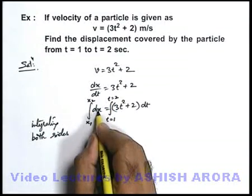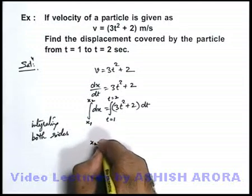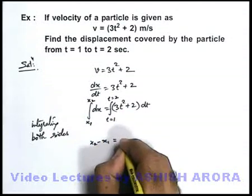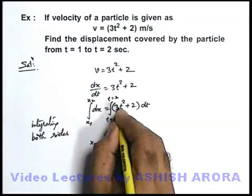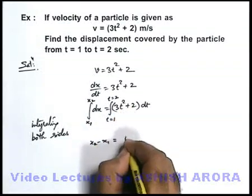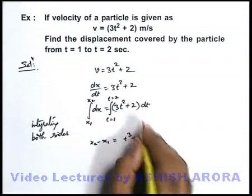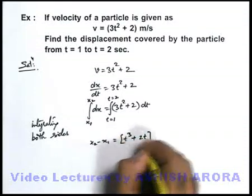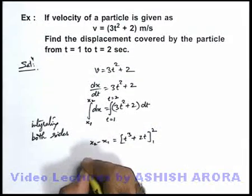If you integrate this dx on left hand side it will become x₂ minus x₁. On right hand side it will become, the integration of 3t² will become 3 into t³ by 3. So it will be t³ plus, the integration of 2 will be 2t. We apply the limits from 1 to 2.